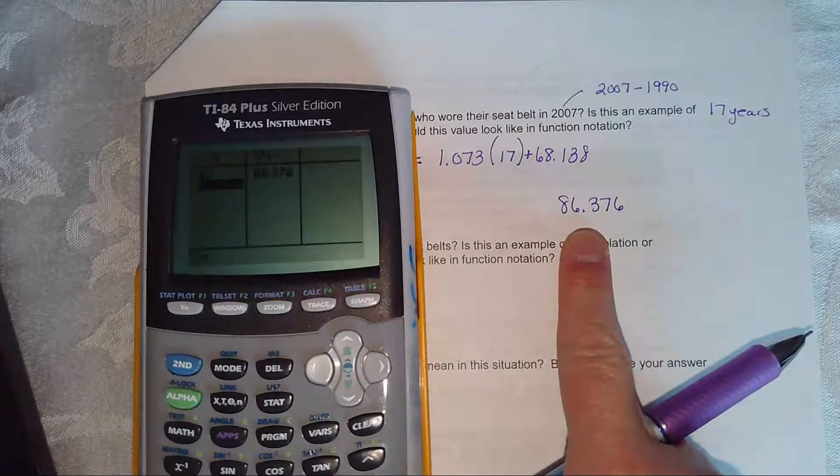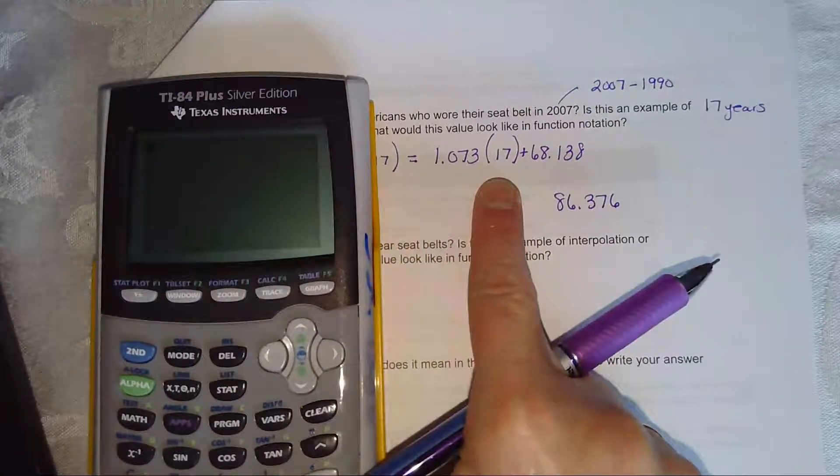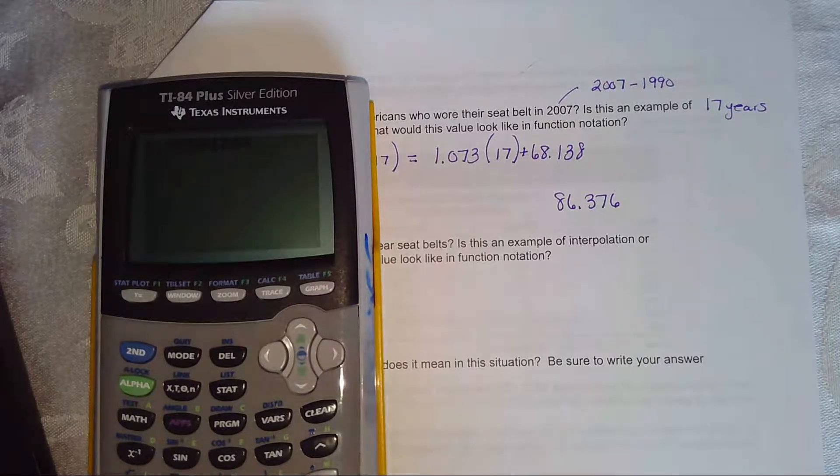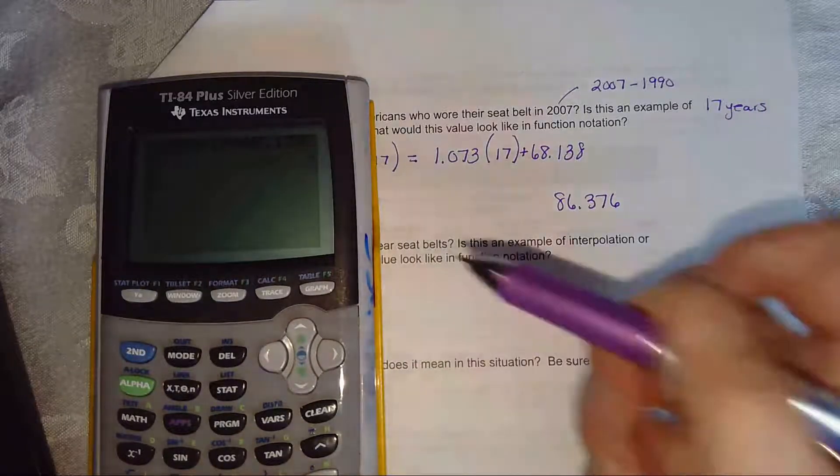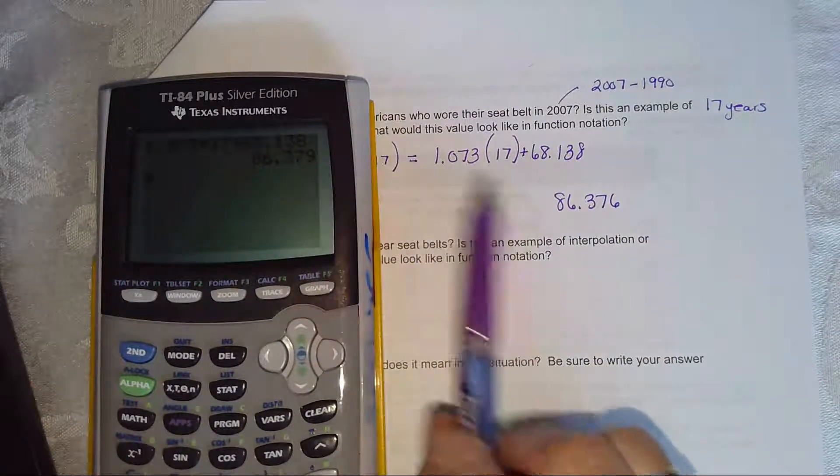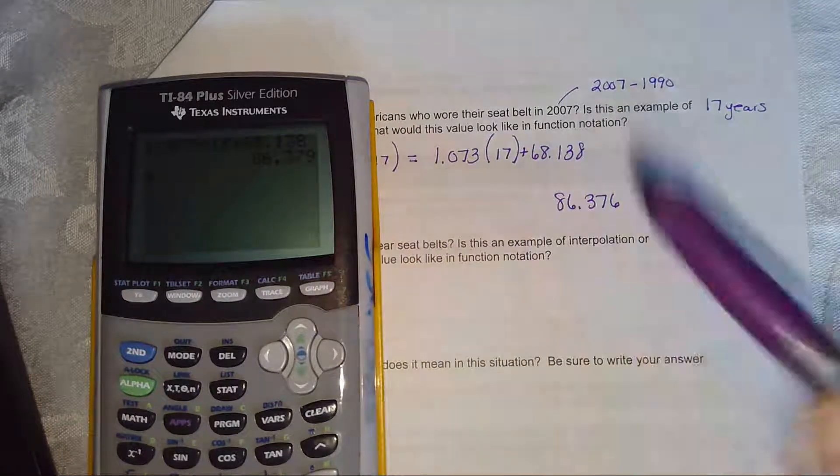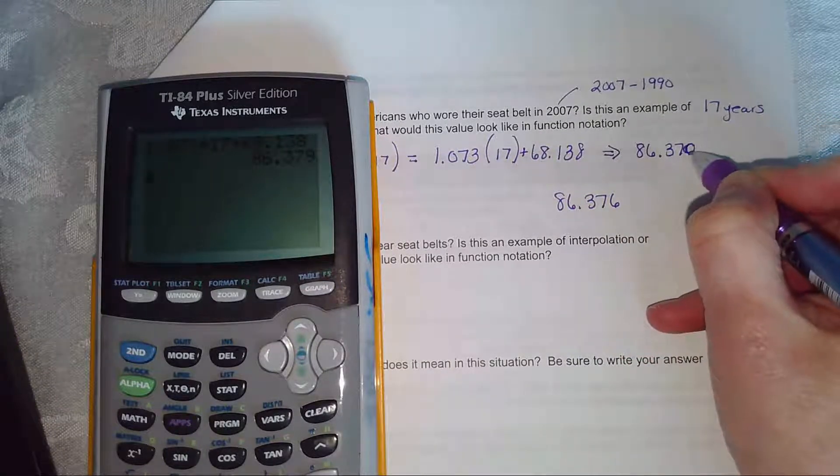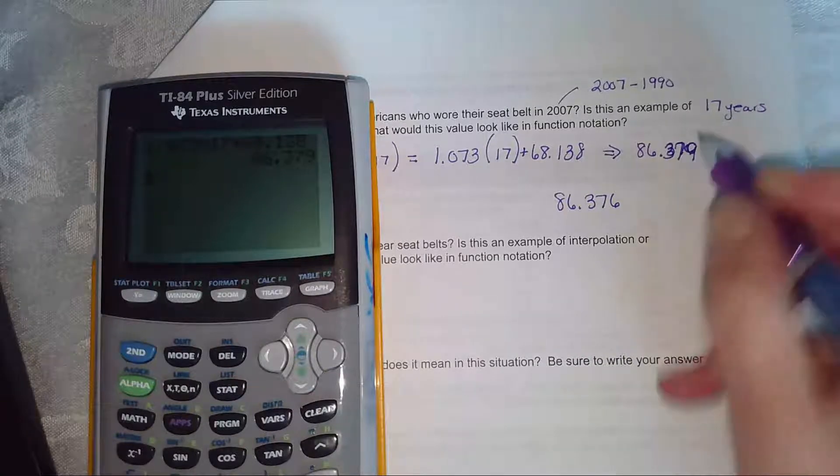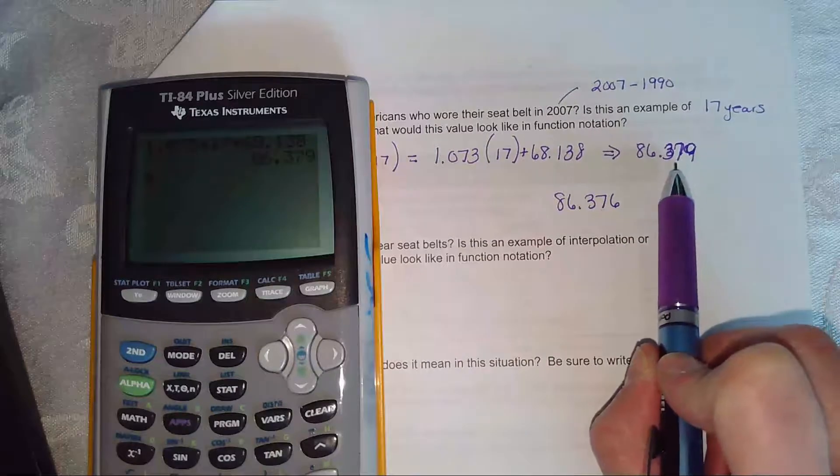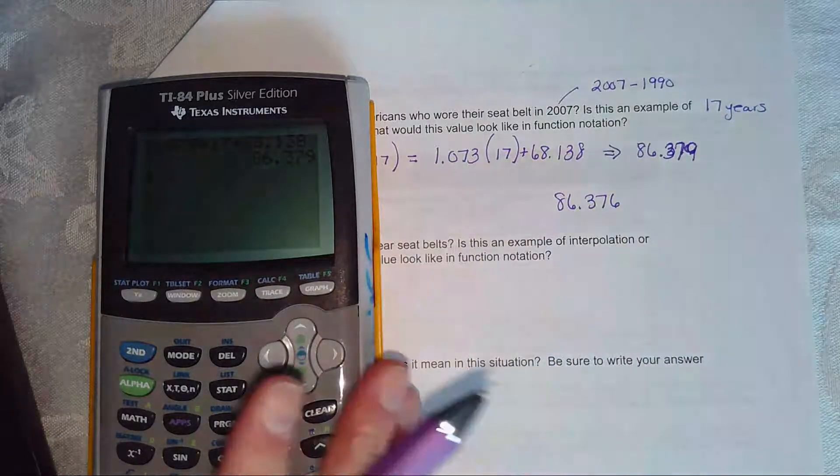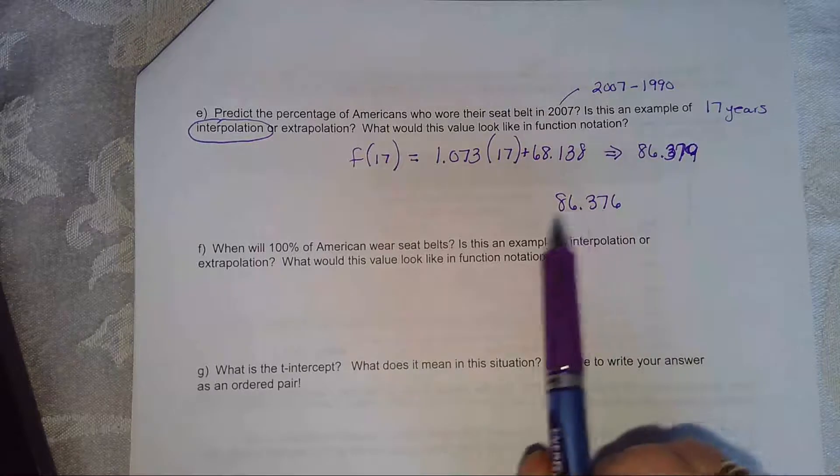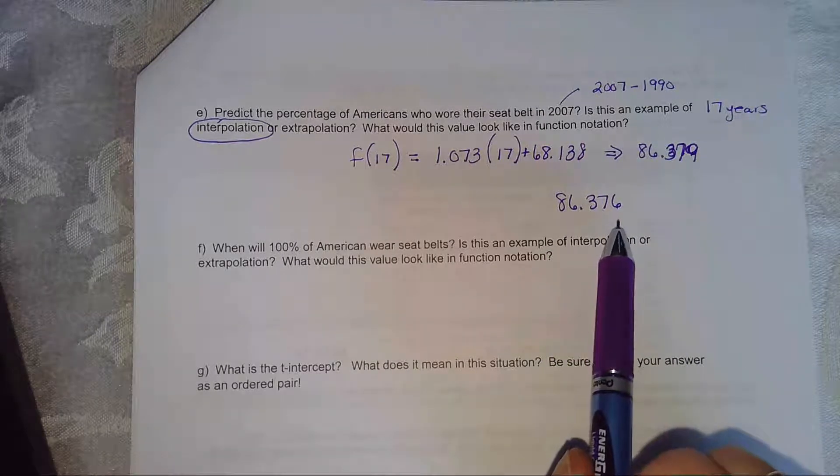Now that's an unrounded answer. If you use the rounded values. Let's see how close it is. The rounded, these are rounded values. So it's pretty close. So just be careful on MyMathLab. When they ask you to use the rounded values, use the rounded values. Otherwise, you're going to be off. You're going to be off by just a little bit. This is unrounded. This is using the rounded values. So it looks like in the year 2007, 86.379 or 86.376 percent of Americans wear seatbelts.